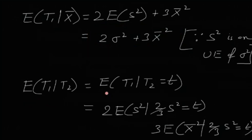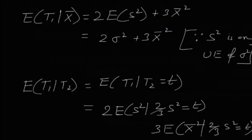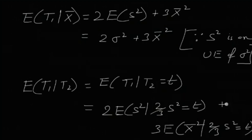For the next part, E[t1 | t2] can be written as E[t1 | t2 = T]. Since t1 = 2S² + 3x̄² and t2 = (2/3)S², we get: E[t1 | t2 = T] = 2·E[S² | (2/3)S² = T] + 3·E[x̄² | (2/3)S² = T].